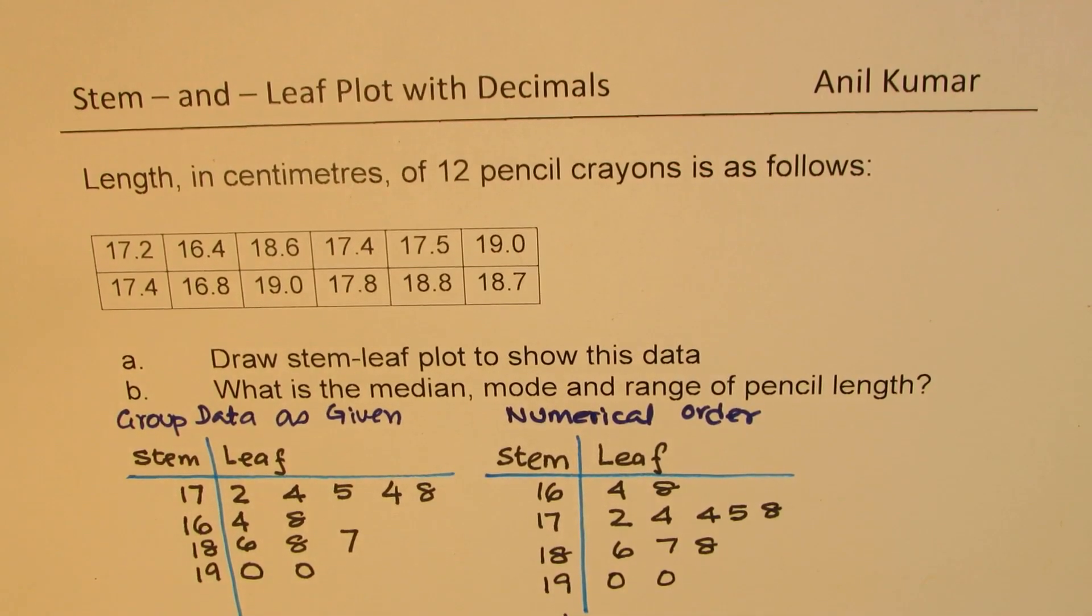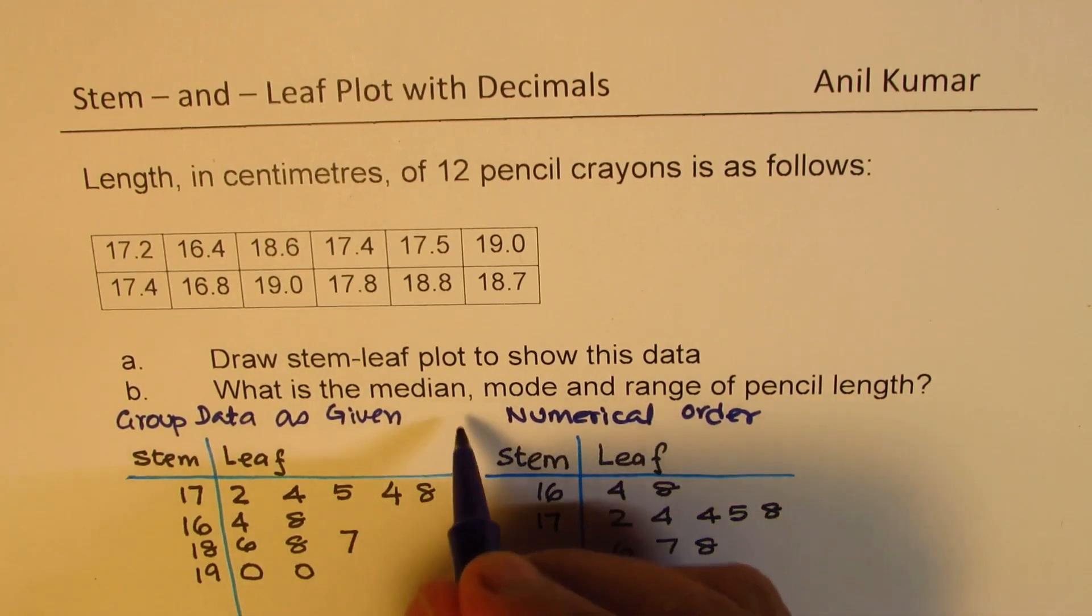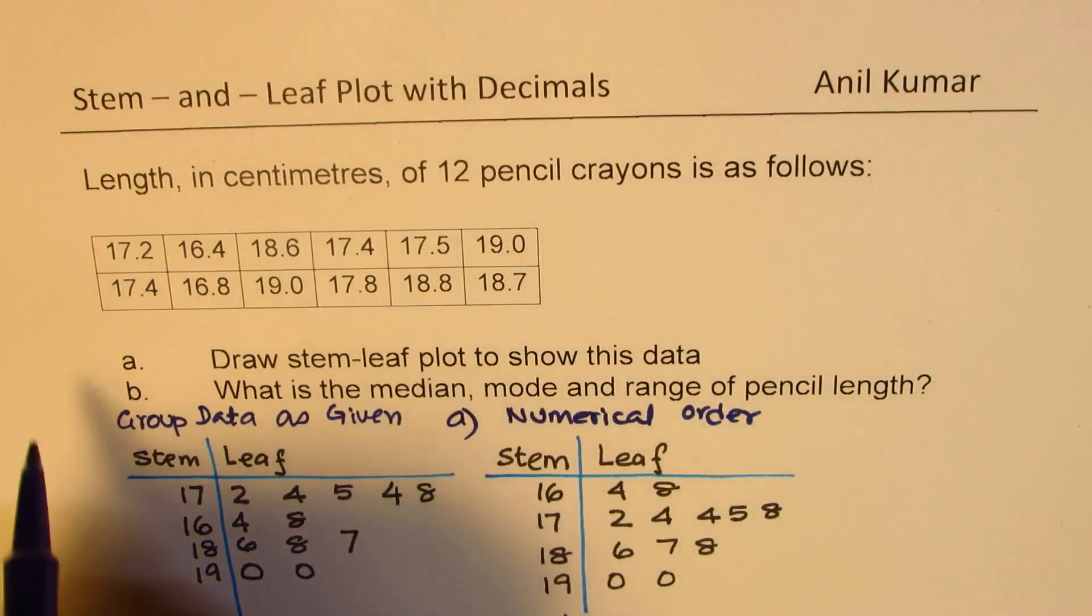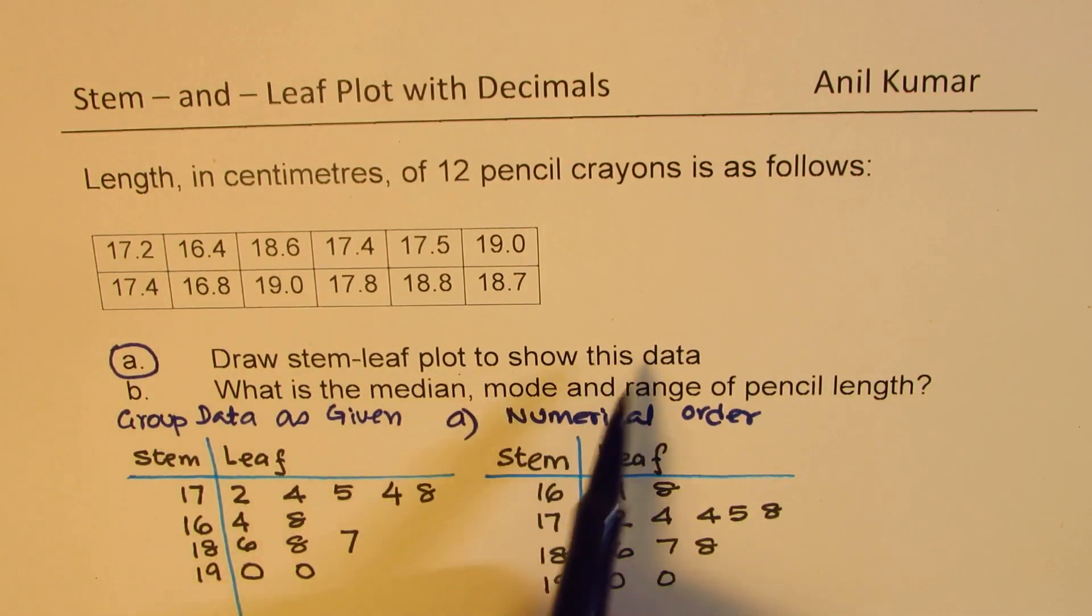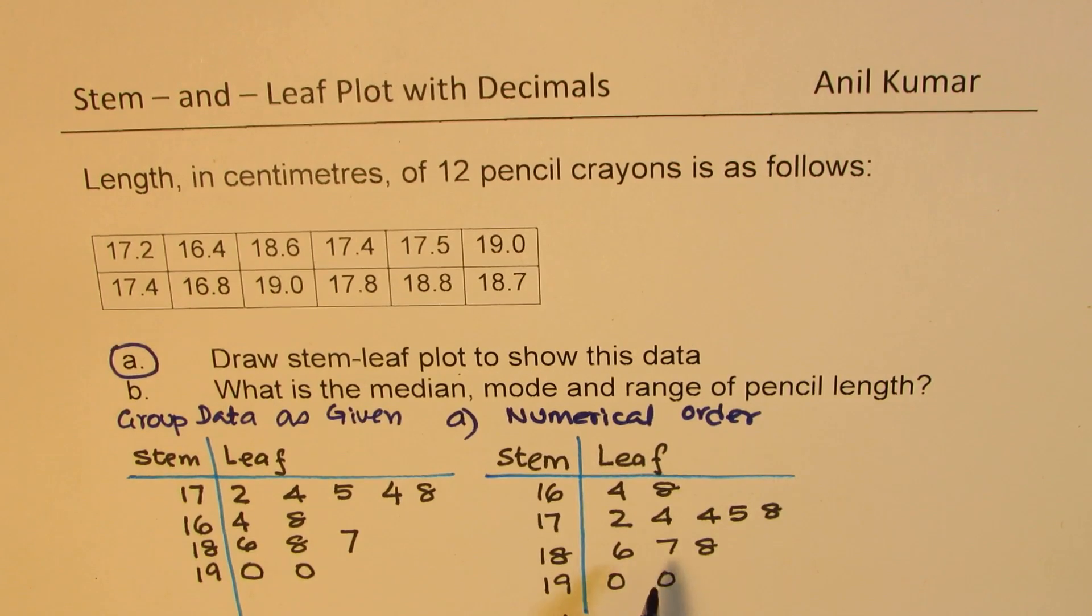And for 19 we have two data elements, 19.0, 19.0. So that becomes our final answer of part (a). So this is what we are supposed to do in part (a). So when you have to draw a stem leaf plot to show this data, that is how you do.